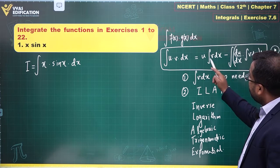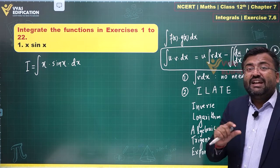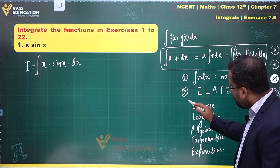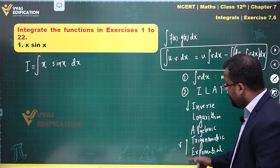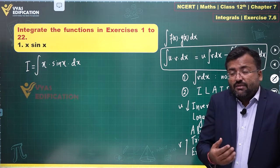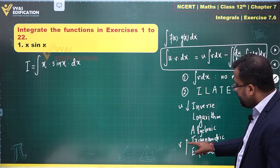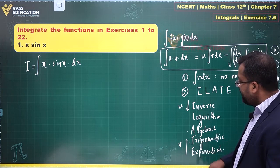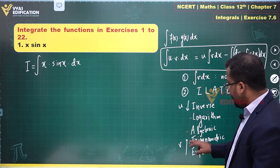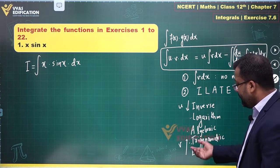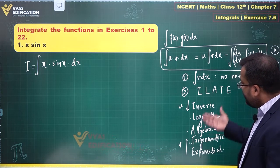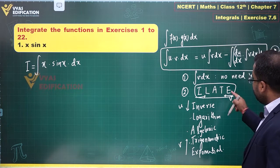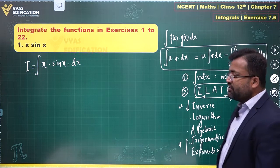Since we are supposed to integrate v, v has to be integrable. We don't yet know the integral of logarithm or inverse functions, so v cannot be chosen from those categories — it must be chosen from the right side of ILATE (Algebraic, Trigonometric, Exponential). For example, with an algebraic and a trigonometric function, trigonometric will be v and algebraic will be u. The functions on the left side of ILATE (I, L) are difficult to integrate, so they become u.